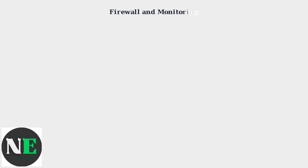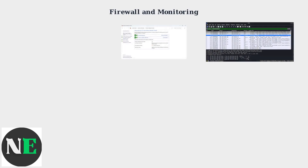Enable Windows Firewall to block unauthorized access, and monitor network activity using tools like Wireshark to detect anomalies.